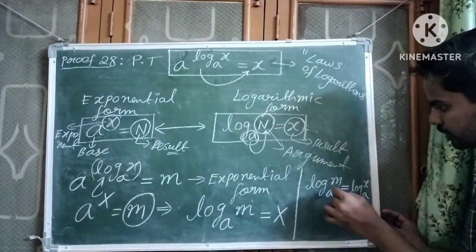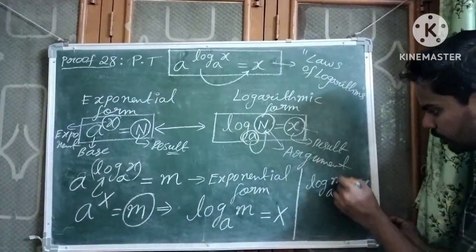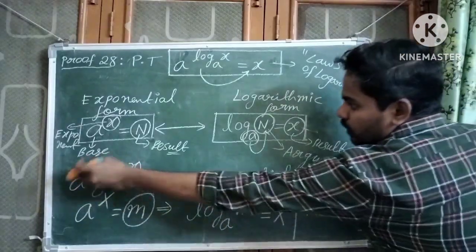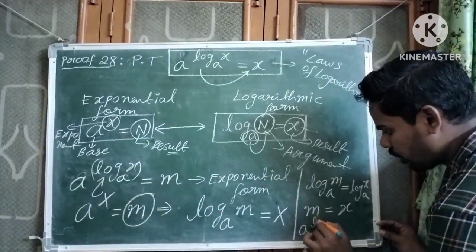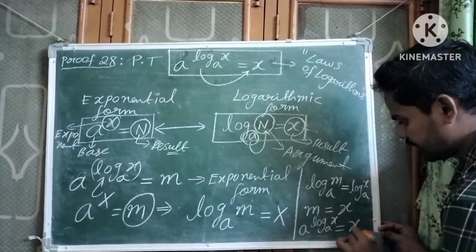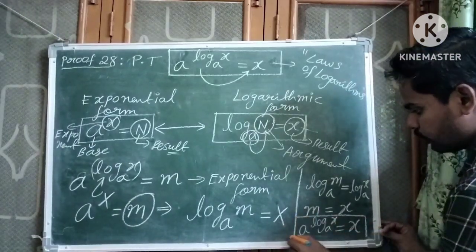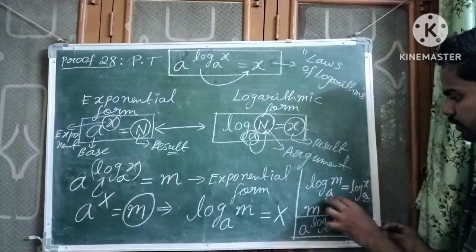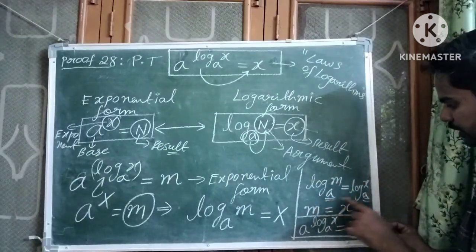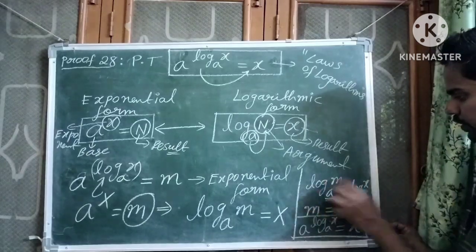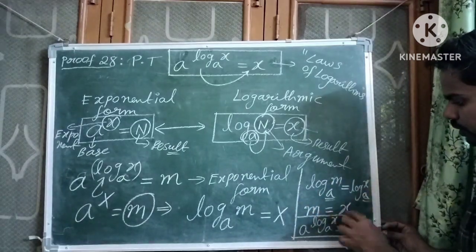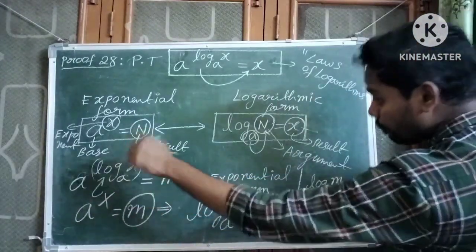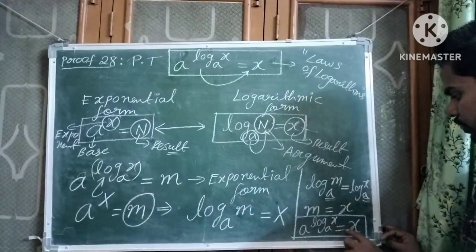When two logarithms have the same base and are equal, their arguments must be equal. So log m to the base a equals log x to the base a implies m equals x. But m is equal to a power log x to the base a. Therefore, a to the power log x to the base a equals x. Hence proved.